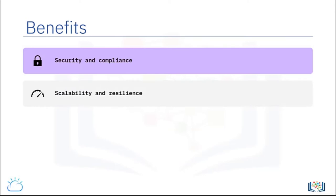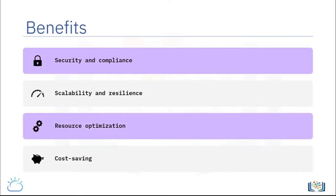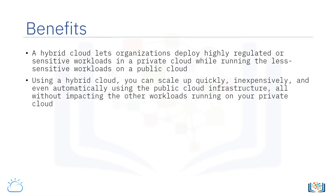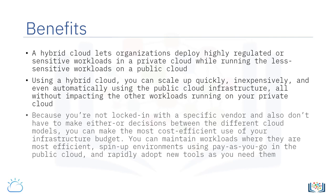Hybrid cloud offers significant benefits in areas of security and compliance, scalability and resilience, resource optimization, and cost saving. A hybrid cloud lets organizations deploy highly regulated or sensitive workloads in a private cloud, while running the less sensitive workloads on a public cloud. Using a hybrid cloud, you can scale up quickly, inexpensively, and even automatically using the public cloud infrastructure, without impacting the other workloads running on your private cloud. Because you're not locked in with a specific vendor and don't have to make either-or decisions between cloud models, you can make the most cost-efficient use of your infrastructure budget, maintain workloads where they are most efficient, spin up environments using pay-as-you-go in public cloud, and rapidly adopt new tools as you need them.